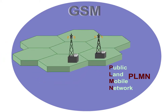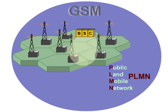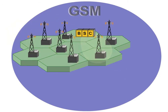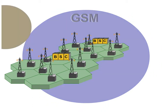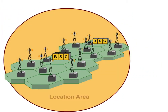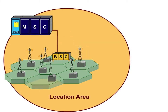Several radio cells are put together to form administrative areas controlled by a BSC. Various areas controlled by one BSC each form a location area controlled by a VLR. It's also possible for a location area to cover one BSC only, or even one cell, if reasonable.